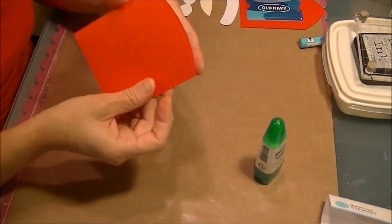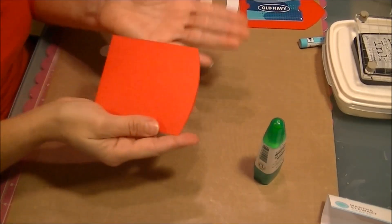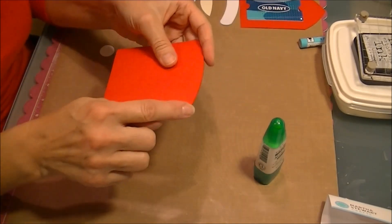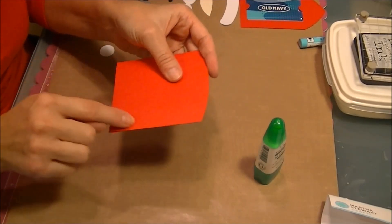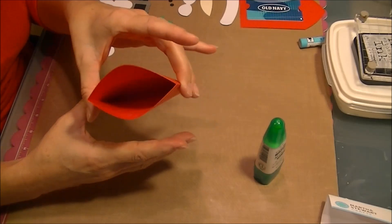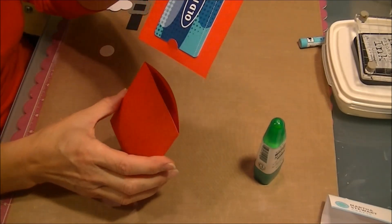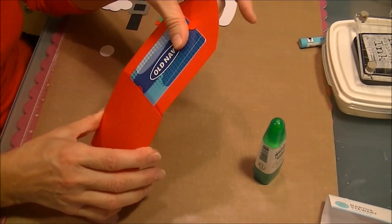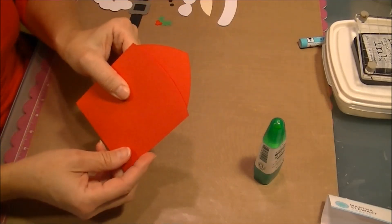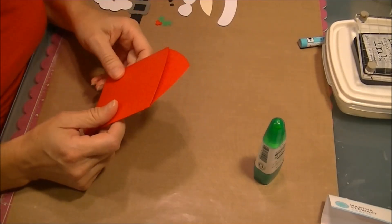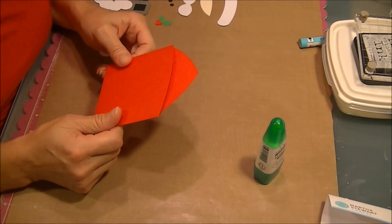I already glued this together. It was opened up like this and then you fold it and glue it along these two sides here and it makes a little pocket for this to go into. Just like that. This is going to be a Santa Claus gift card holder.